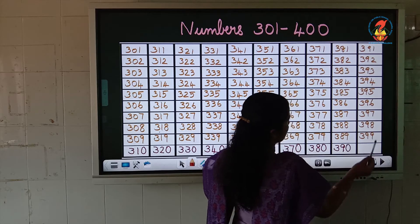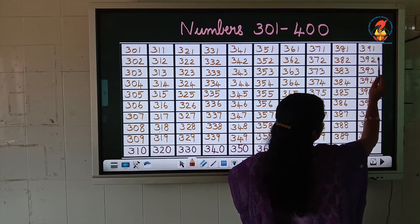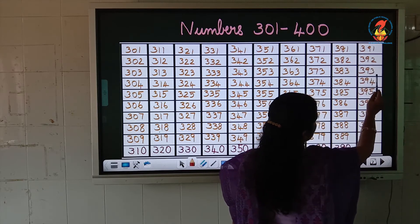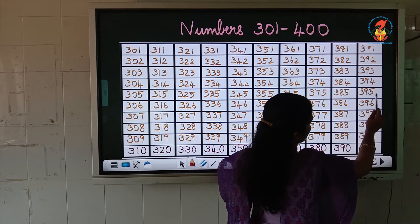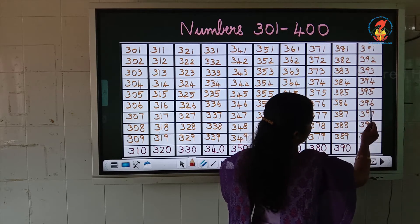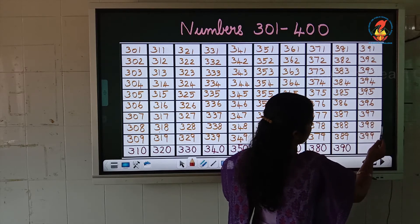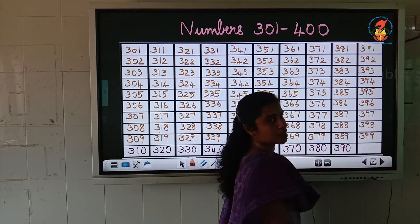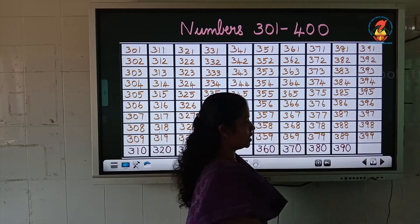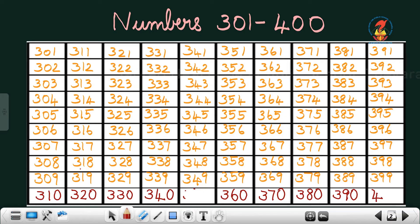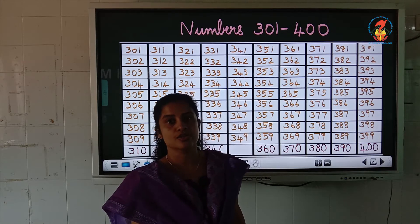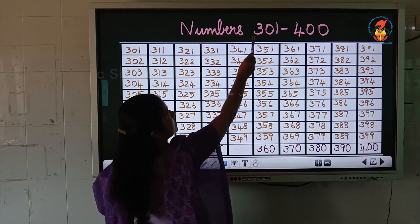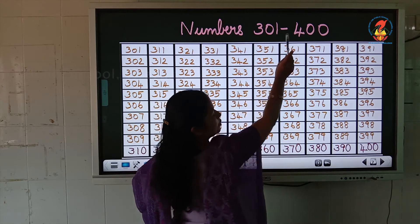After 390, 391, 392, 393, 394, 395, 396, 397, 398, 399. What comes after 399? 400. This is 400. Understand children? Today you studied numbers from 301 to 400.